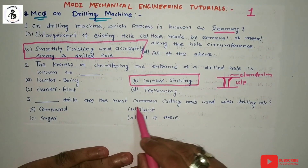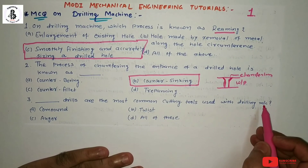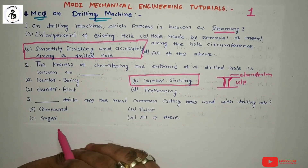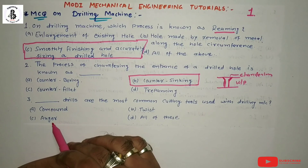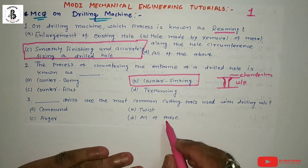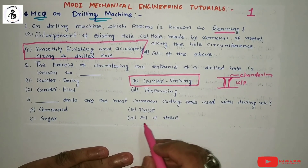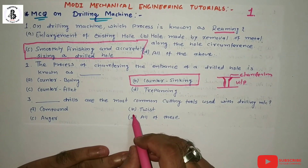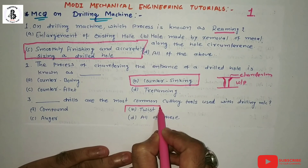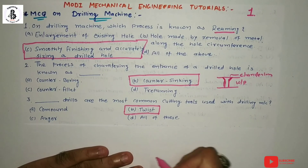Which drills are the most common cutting tools used with a drilling machine? Option A: compound drills, option B: twist drill, option C: auger drill, option D: all of the above. The most common cutting tool used in drilling machines is the twist drill. So the answer is option B.